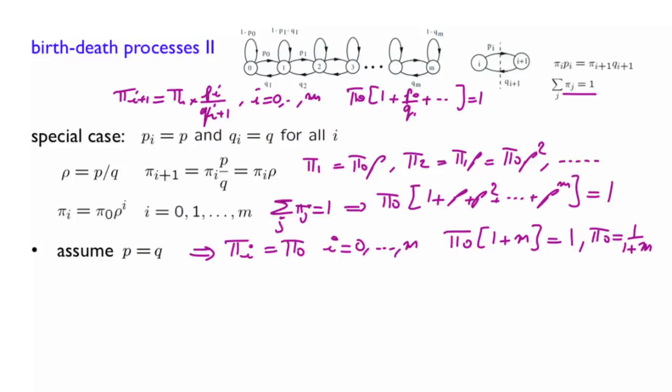This is consistent with the fact that all steady state probabilities are the same. They are all equally likely. There are m plus 1 states, and so each one of them, pi i, is pi of 0, which is 1 over 1 plus m. The Markov chain is equally likely to be in any of these m plus 1 states in the long run.